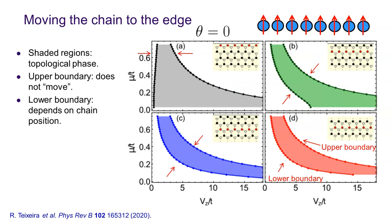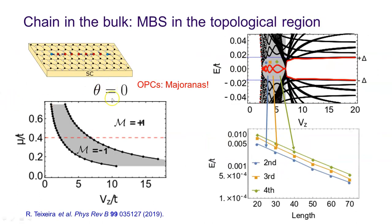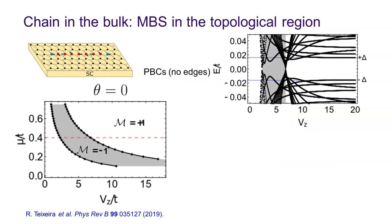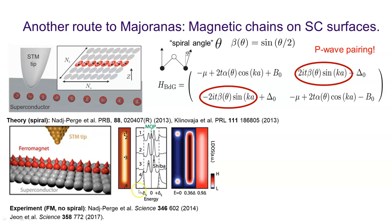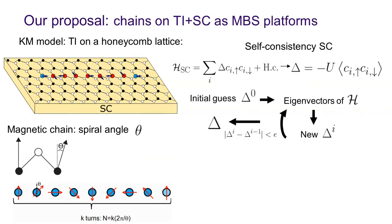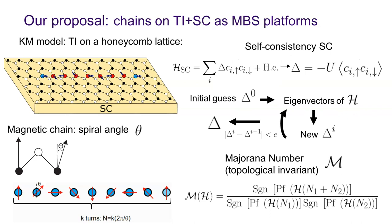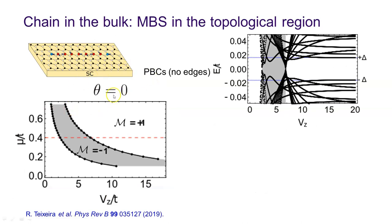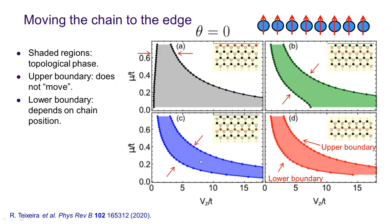This is for theta equals zero — ferromagnetic alignment. In our case, Majorana states exist even for the ferromagnetic case, consistent with the interpretation from those experiments. We are in the regime where Shiba bands are present, and the closing of the Shiba bands marks the onset of the topological region. Even at theta equals zero you have Majorana states — an important point I didn't stress enough in the March Meeting talk. Now, what happens when we move the chain towards the edge?